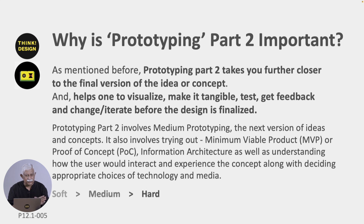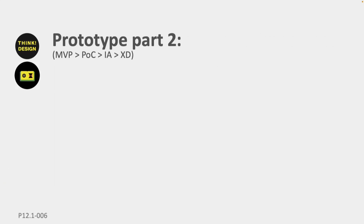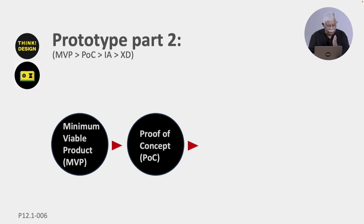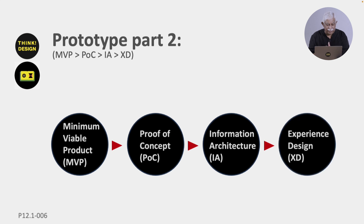You have to make use of all of them. You are moving from a soft prototype to a medium prototype and becoming much better at what you are trying to do. That means you make use of MVP — minimum viable product — POC — proof of concept — IA — information architecture — and XT — experience design — all of these while doing your prototype.